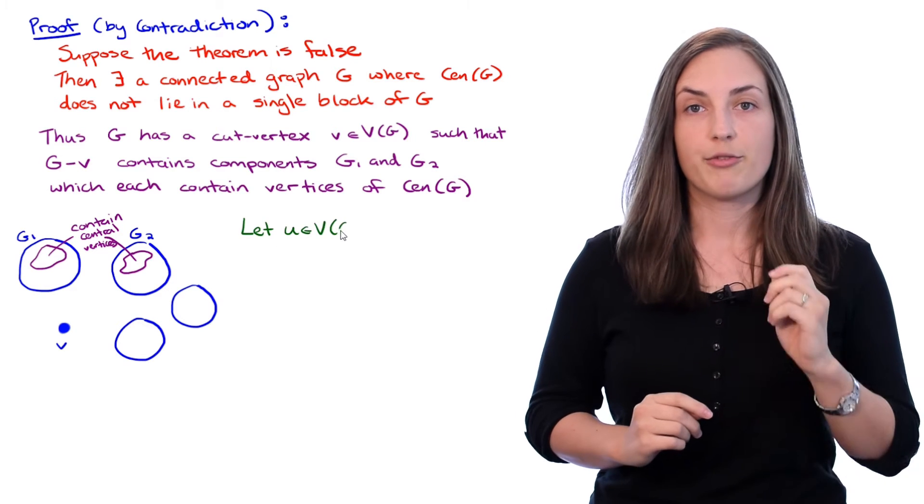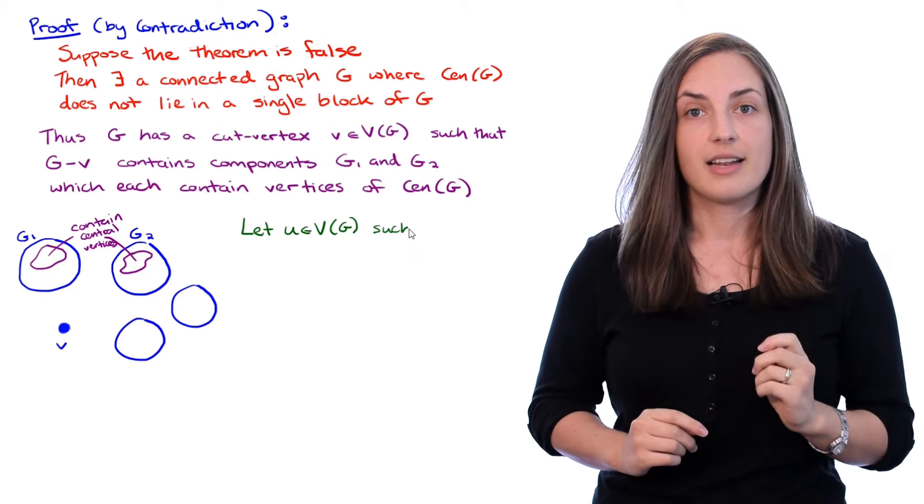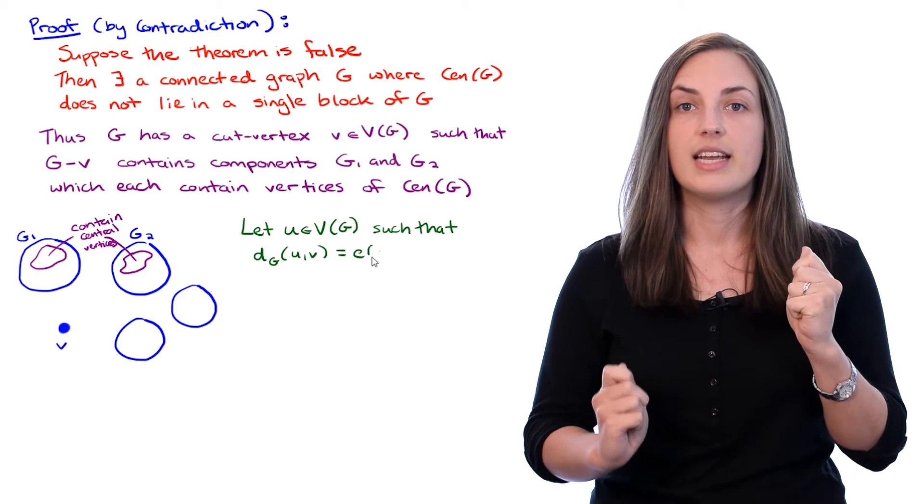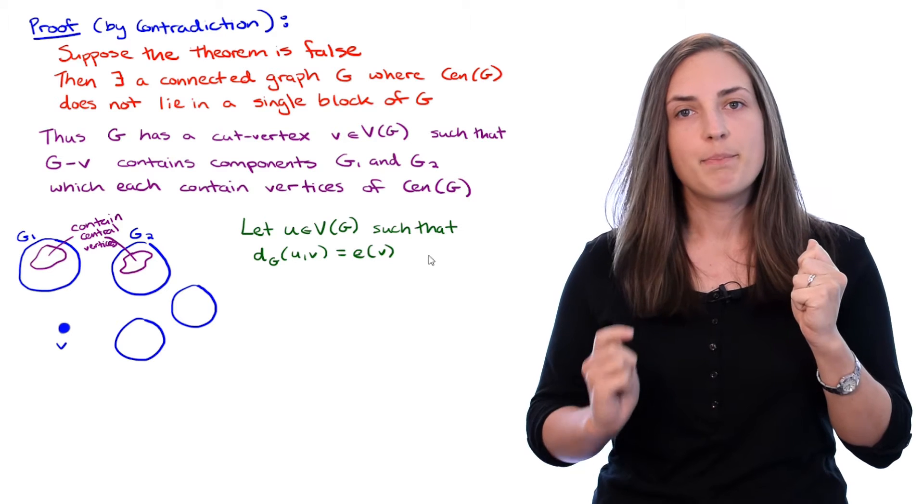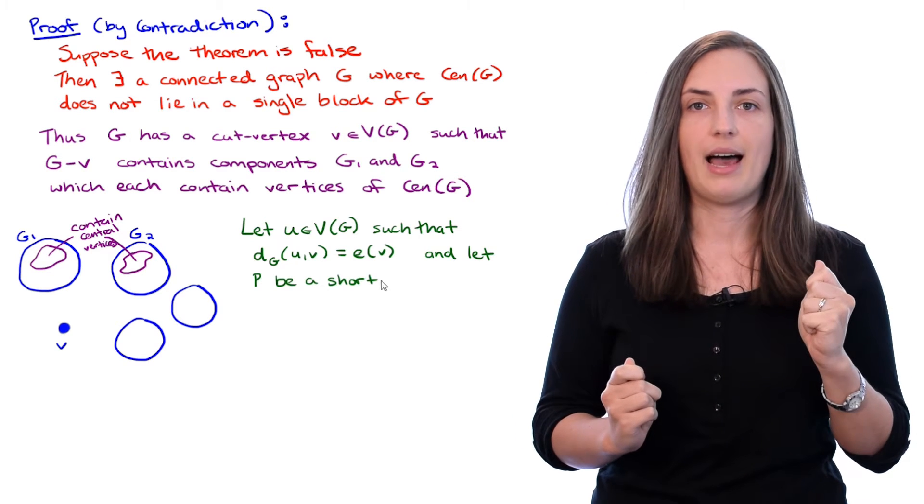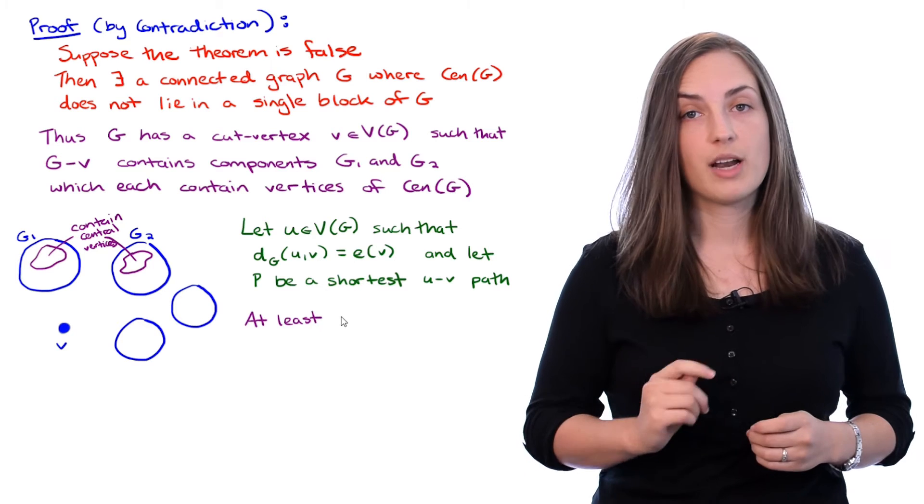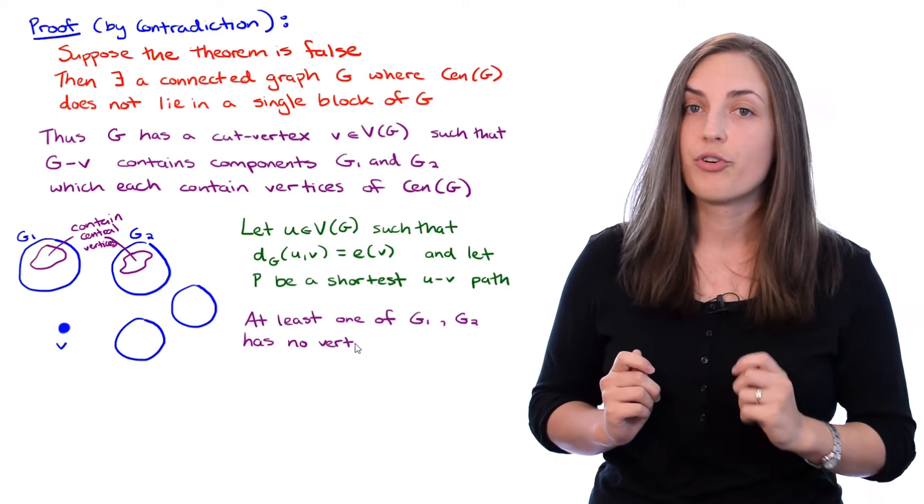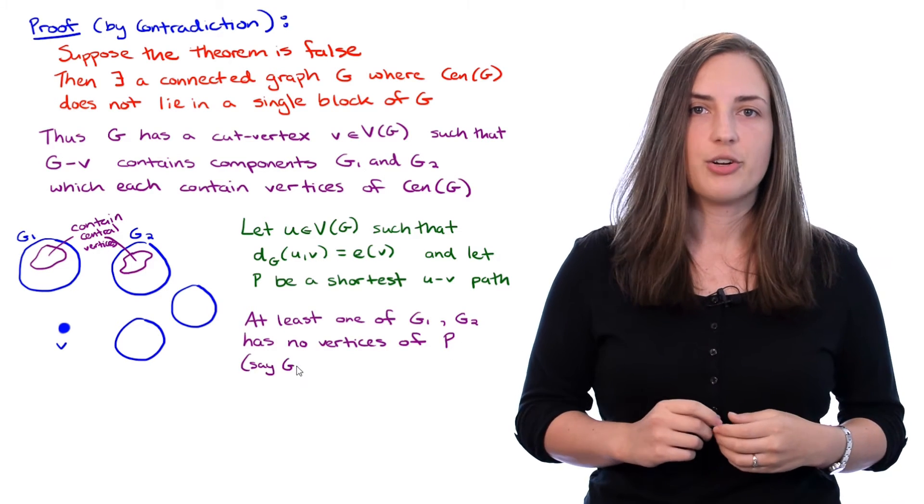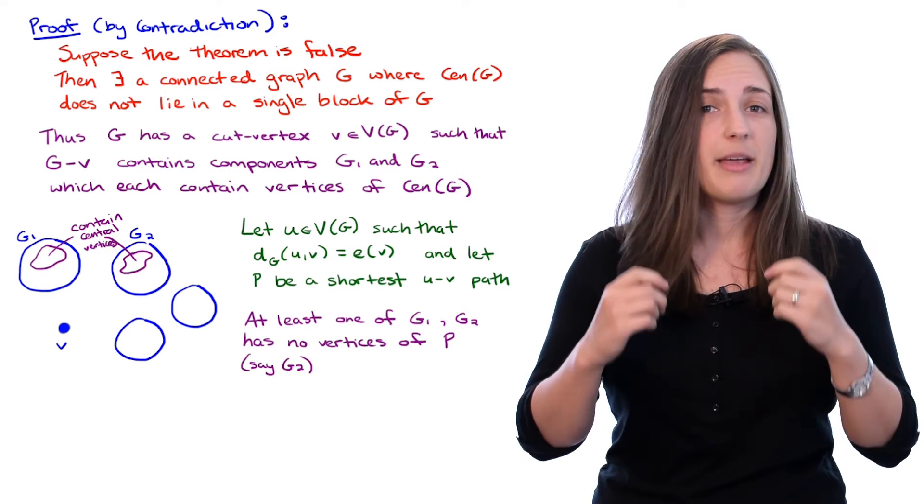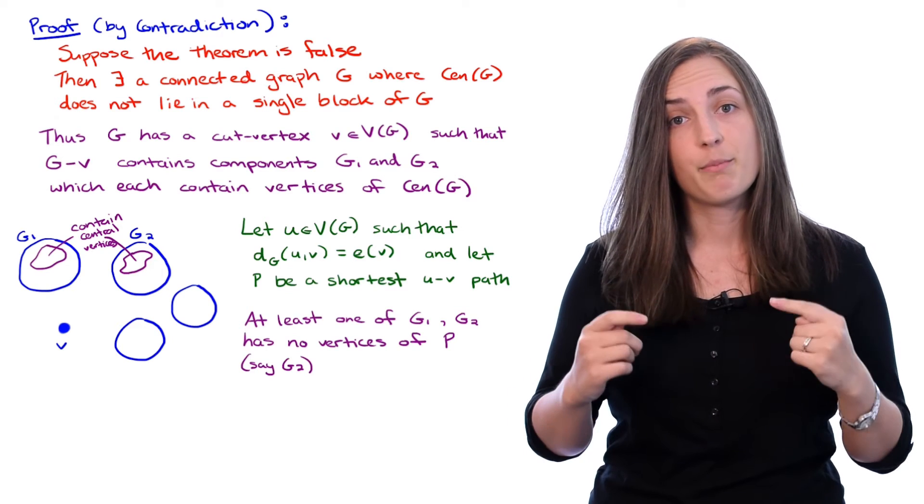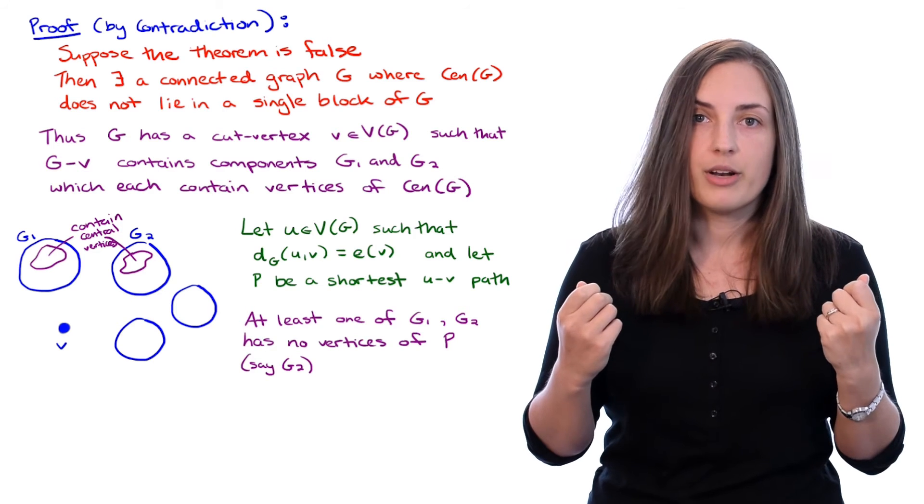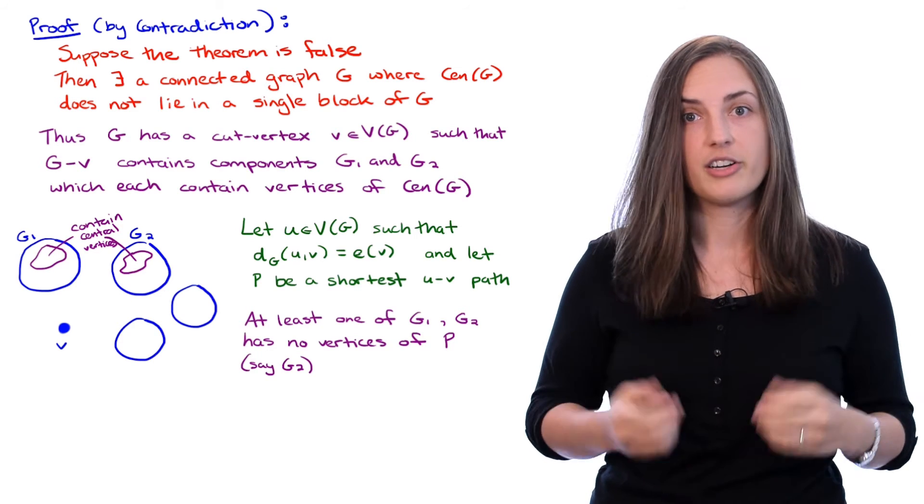Now let U be a vertex in the graph such that the distance from our vertex V to U is equal to the eccentricity of V and let P be a shortest UV path in the graph G. At least one of the components G1 and G2 has no vertices of the path P. Let's say G2. This is because if they both had vertices of the path P then they would be connected by that part of the path and they would not be separate components. That would contradict the fact that they are distinct components.